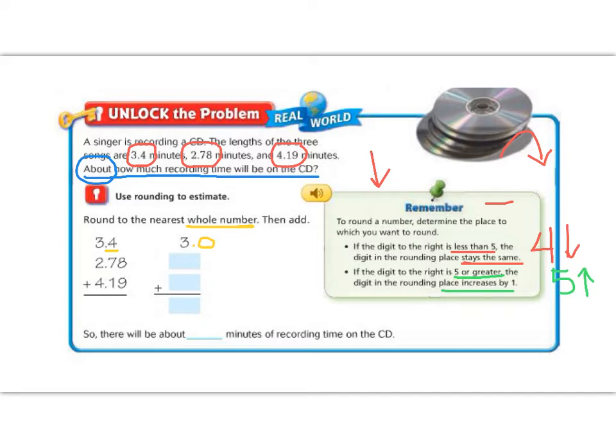Let's practice with 2.78. So we're going to round to the nearest whole number. So we underline the digit and look next door. Next door, I see a 7. 7 is greater than 5, so that means I'm going to round up. So 2.78 is going to change into 3.